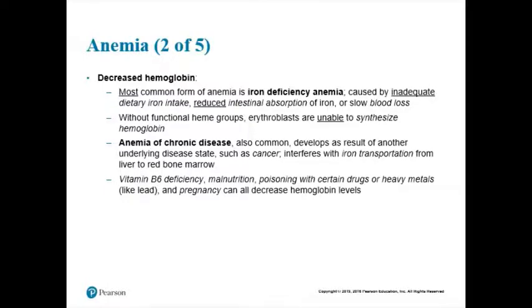So know these anemias: pernicious anemia is due to a lack of vitamin B12, so you can't rapidly make red blood cells. Hemolytic anemia is where you're destroying red blood cells. And aplastic anemia is where you're not even making them — your red bone marrow is not making them. Those are reasons why you might have a decreased hematocrit leading to anemia.